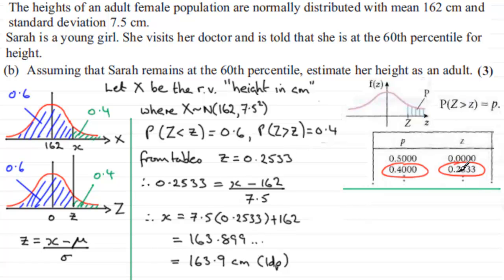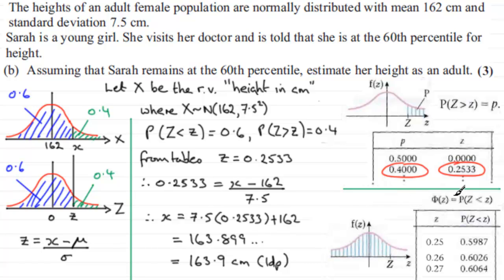Now it's not the only set of tables that you could use to do this problem. You could use the normal set of tables which give the probability of being less than a given value of z as in this diagram here, this area to the left of z. And if that were the case, we've got here the probability of being less than this value of z is 0.6.